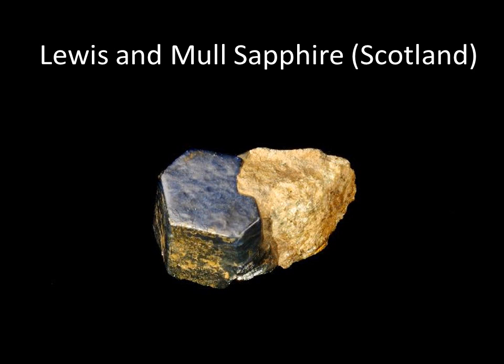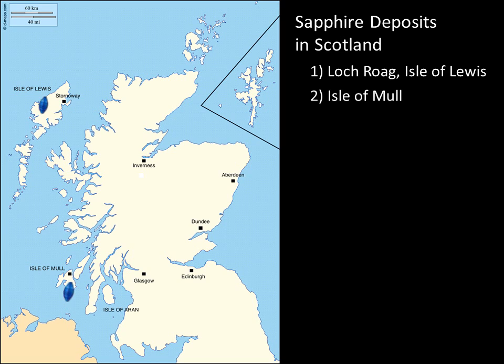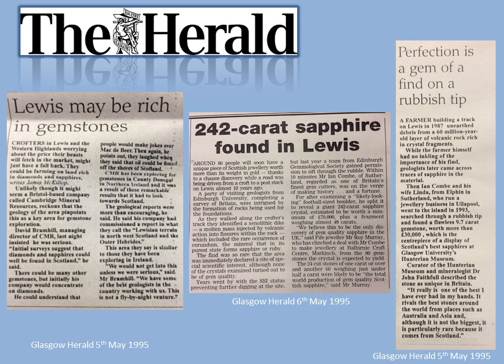I like the Isle of Lewis sapphire location because you can look for sapphires and have whisky at the same time. Sapphire deposits in Scotland actually occur in a few places, including the Isle of Arran and other parts of the northwest, but the two main ones are Mull and Lewis. Lewis has the more significant deposit and caused quite a stir in the mid-1990s. Around 1995, a 242-carat sapphire was found there in a dyke structure — builders were constructing a track on a farmer's field and came across sapphires.